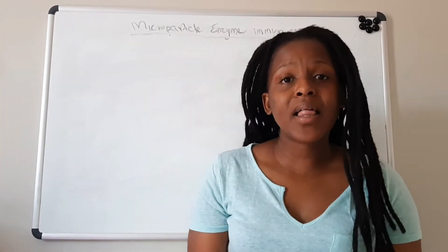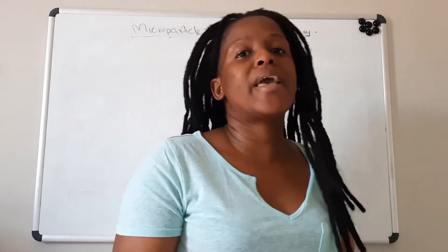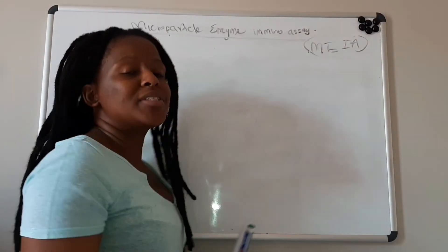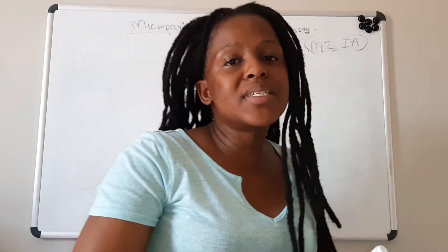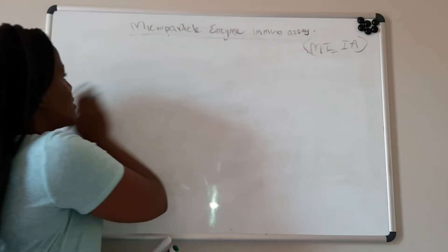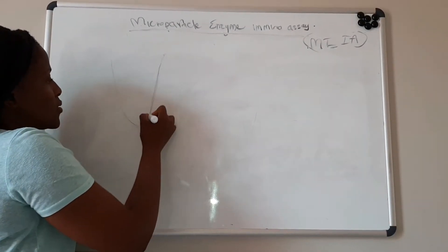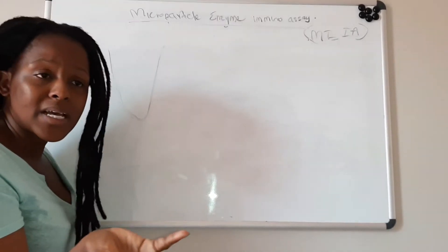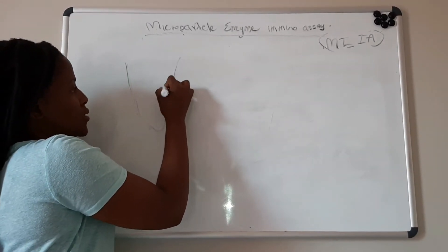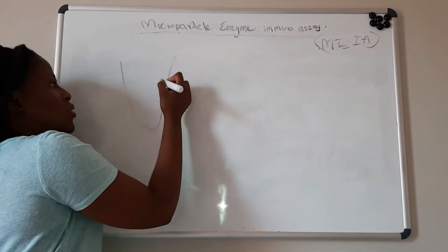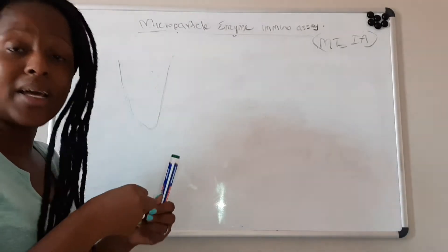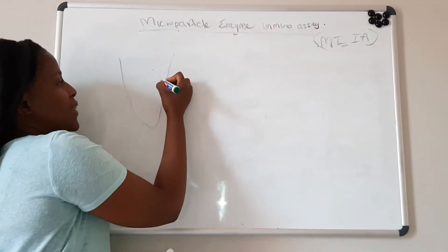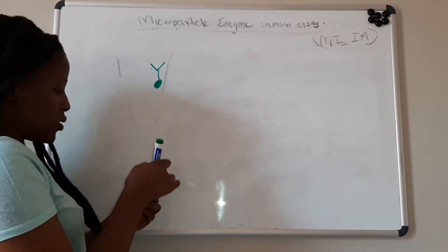Microparticle enzyme immunoassay, which can be abbreviated as MEIA. The principle of MEIA basically uses a solution of suspended latex particles — this will be your cuvette. So you're going to have a suspended latex particle, and this latex particle is attached to an antibody, which is suspended into the solution.